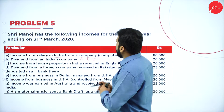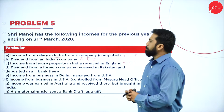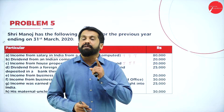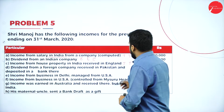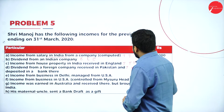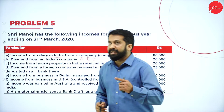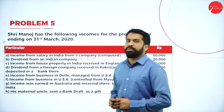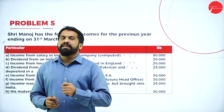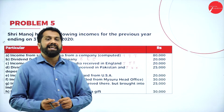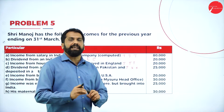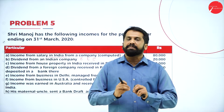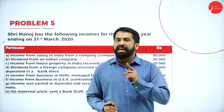Dividend from foreign company received in Pakistan — if it is received in Pakistan, taxable for only one person: taxable, exempted, and exempted. Next, income from business in Delhi managed from USA. Anything related to India — received in India, earned in India, or the business is located in India — means all three persons pay tax. Business in Delhi means it is in India, so taxable, taxable, and taxable.